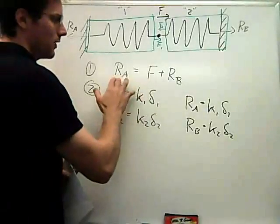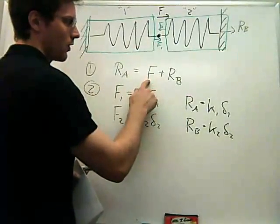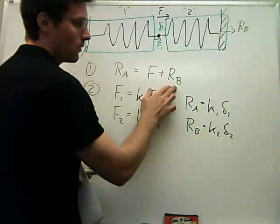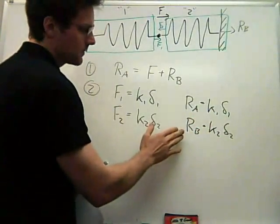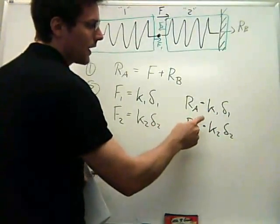Okay, so now I have this equation where F is known, but I don't know RA and I don't know RB. Now I have two equations—Hook's law for each one of my springs—but again I don't know RA and I don't know RB.